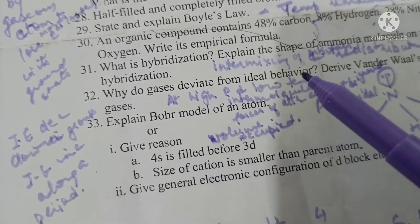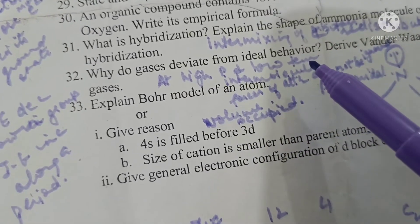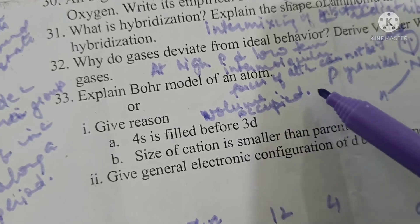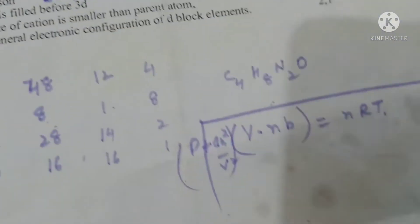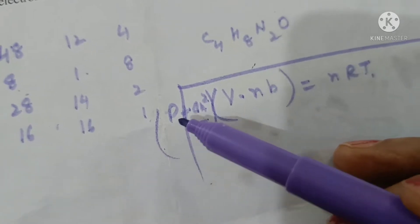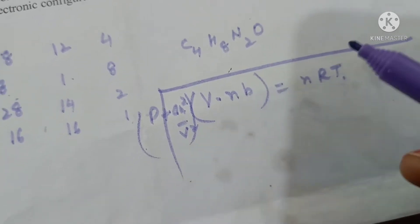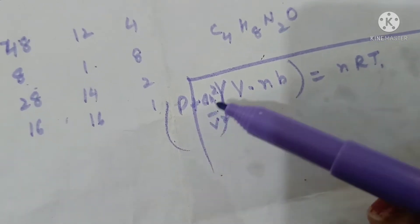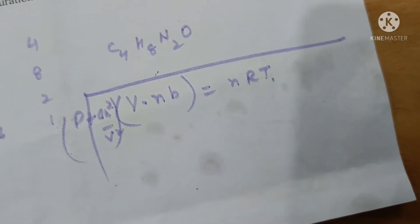Why do gases deviate from ideal behavior? This is because at high pressure and low temperature, the intermolecular forces of attraction are significant and also the volume occupied by the molecules cannot be ignored. So the pressure and volume of the ideal gas changes to real gas pressure. Actual pressure is P plus A N squared upon V squared. Similarly, volume is V minus NB. So the real gas equation, Van der Waals equation becomes P plus A N squared upon V squared into V minus NB equals nRT.